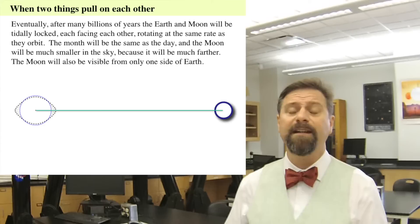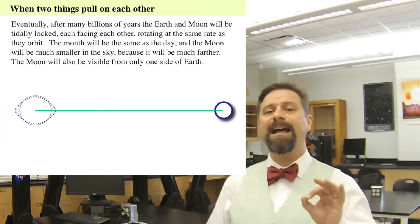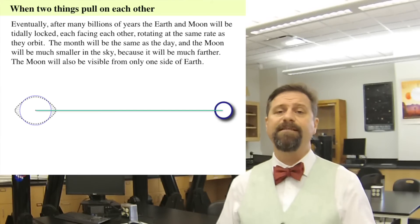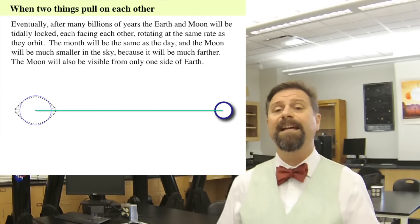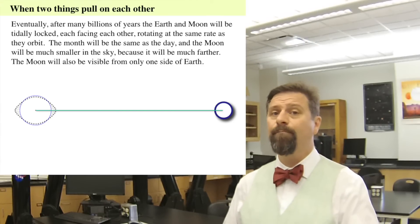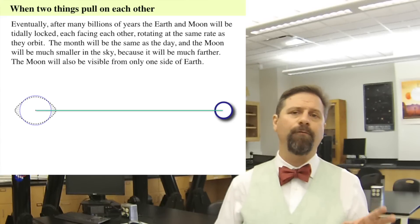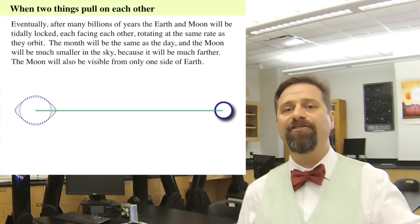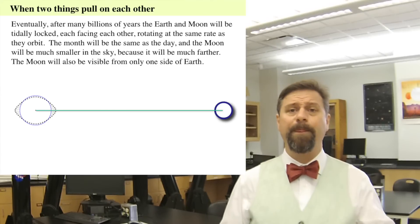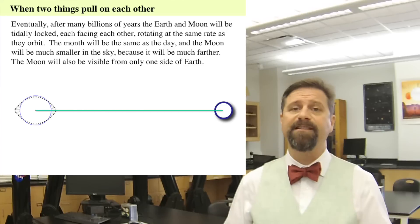That alignment will take billions of years — long after humans are gone. In that distant future, the Moon will only be visible on one side of the Earth, because as the Earth's rotation slows down, the month also slows down until the rotation of the Earth matches the month. So in the very distant future, the day will equal the month and the Moon will only be visible on one side of the Earth.